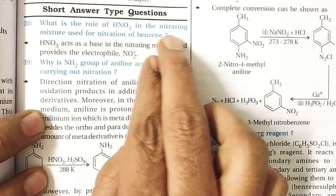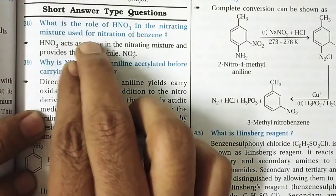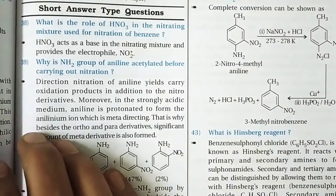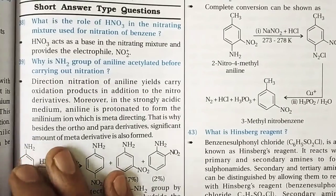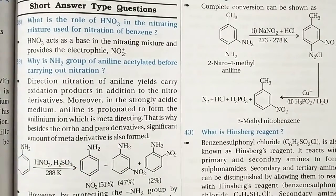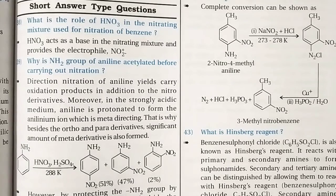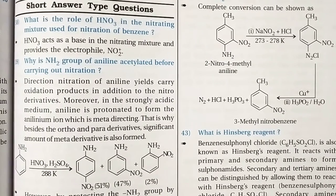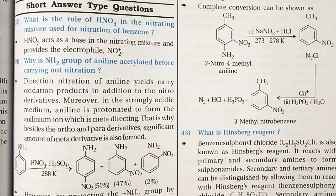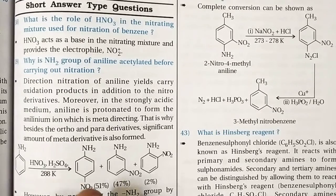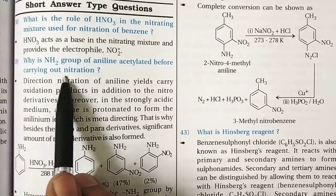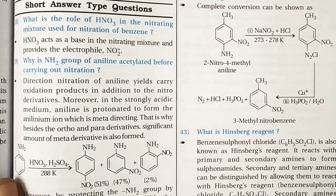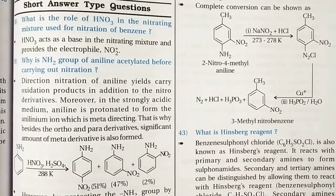Question 38: What is the role of nitric acid in the nitrating mixture used for nitration of benzene? HNO3 acts as a base in the nitrating mixture. The nitrating mixture consists of concentrated HNO3 and concentrated H2SO4. H2SO4 acts on HNO3 to generate an electrophile — the nitronium ion (NO2+).